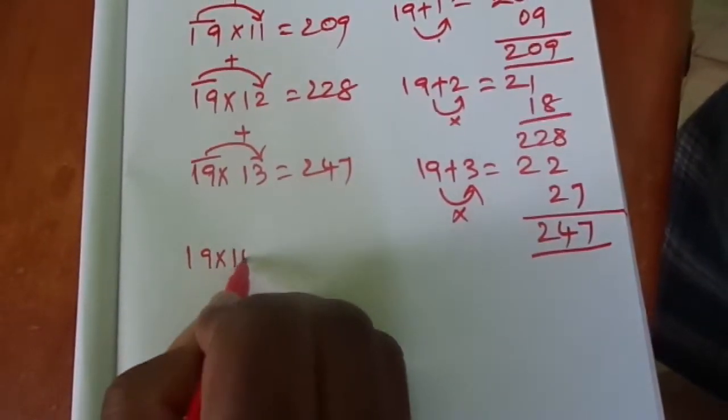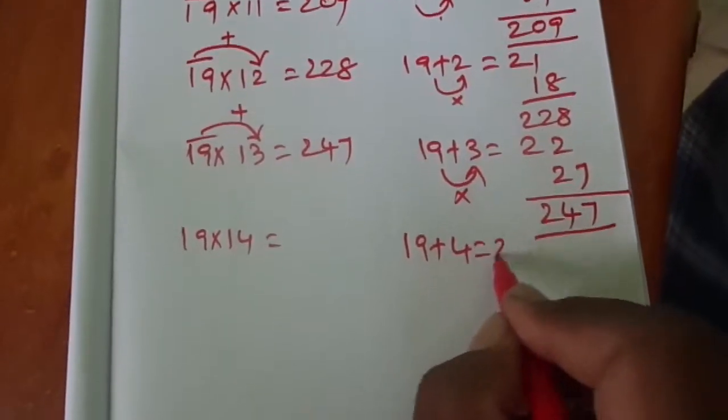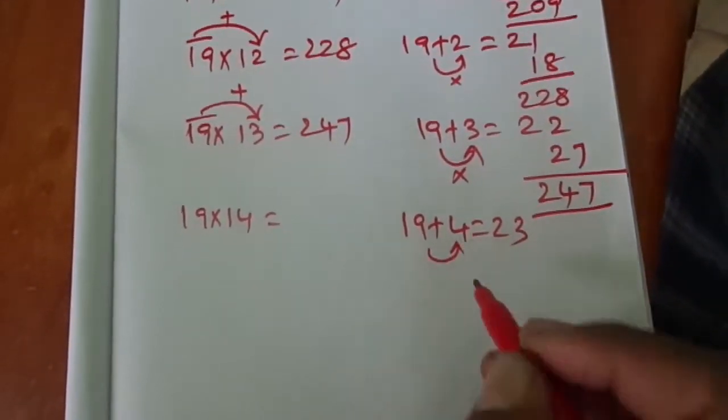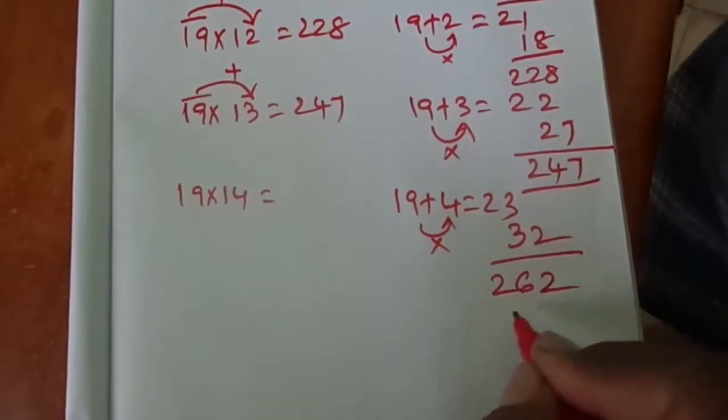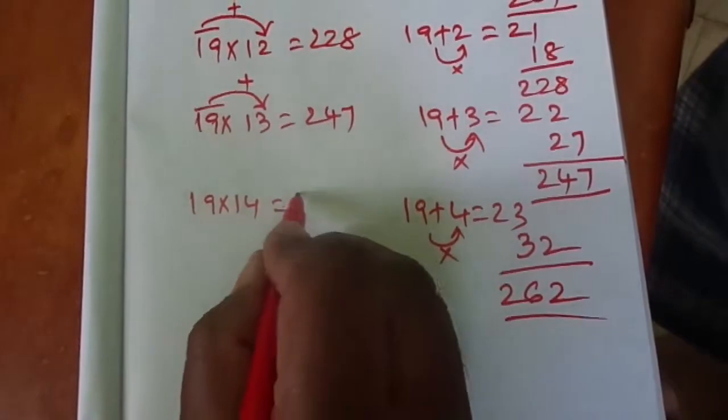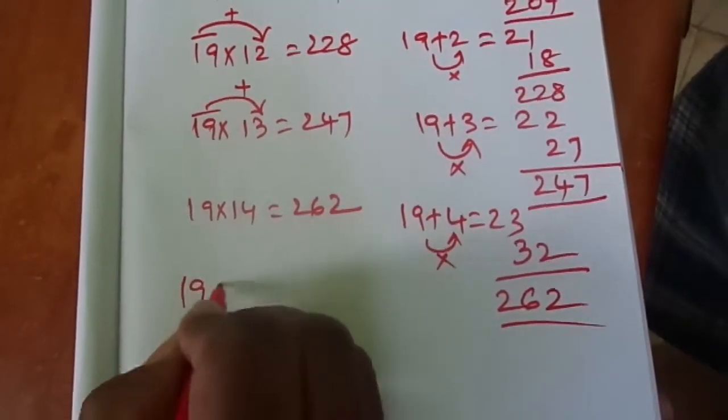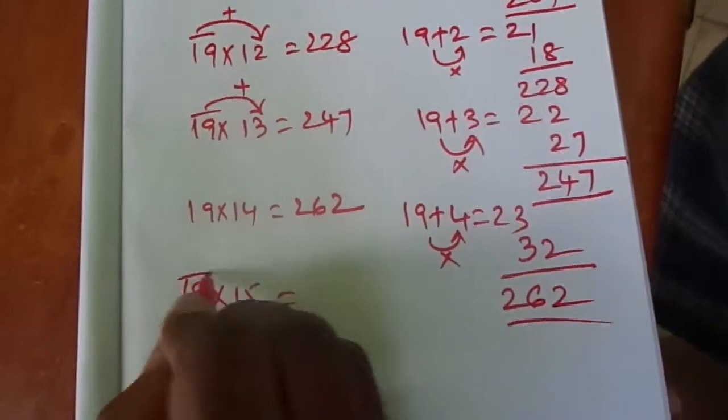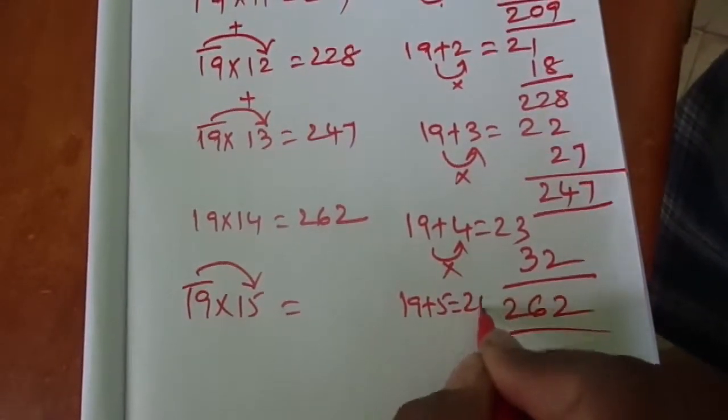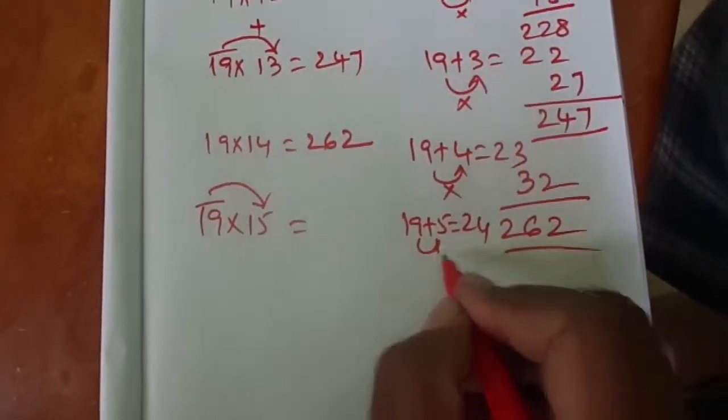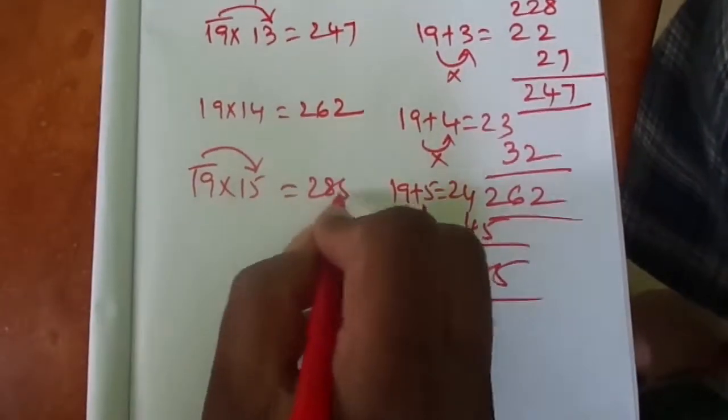19 × 14: 19 plus 4 equals 23. 9 × 4 is 32. 23 plus 32, you got 262. 19 × 15: 19 plus 5, answer is 24. 9 multiplied by 5 is 45. The answer is 285.